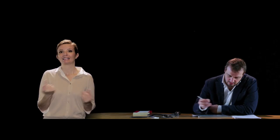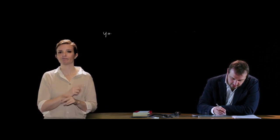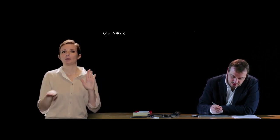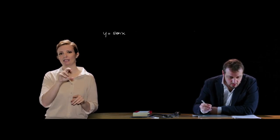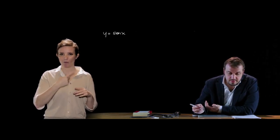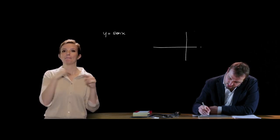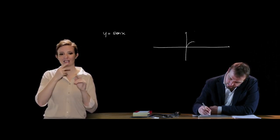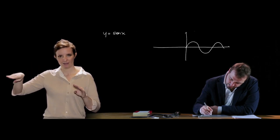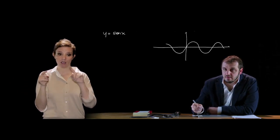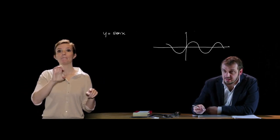Chiudiamo questa lezione con l'introduzione delle funzioni goniometriche inverse. La funzione y = sen x non è invertibile perché non è biiettiva: la sinusoide non è né iniettiva né suriettiva.